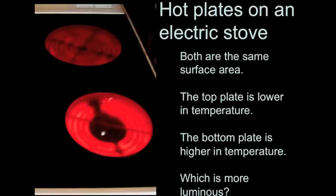Let's do a few examples of this. I've got an image here of an electric stove, something you are probably familiar with. There are two hot plates on this electric stove. In the image, it looks like one is brighter, that's the bottom one, and one is less bright, and that's the one on the top.